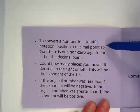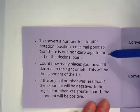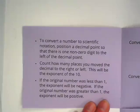So to convert a number to scientific notation, position a decimal point so that there is one non-zero digit to the left of the decimal point.